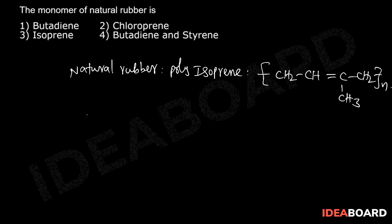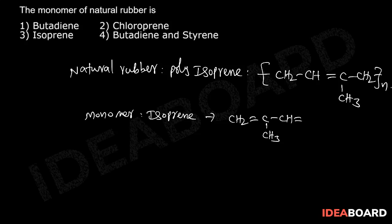The monomer is isoprene. Isoprene means 2-methyl-1,3-butadiene. That means CH2 double bond, C(CH3)-CH double bond.